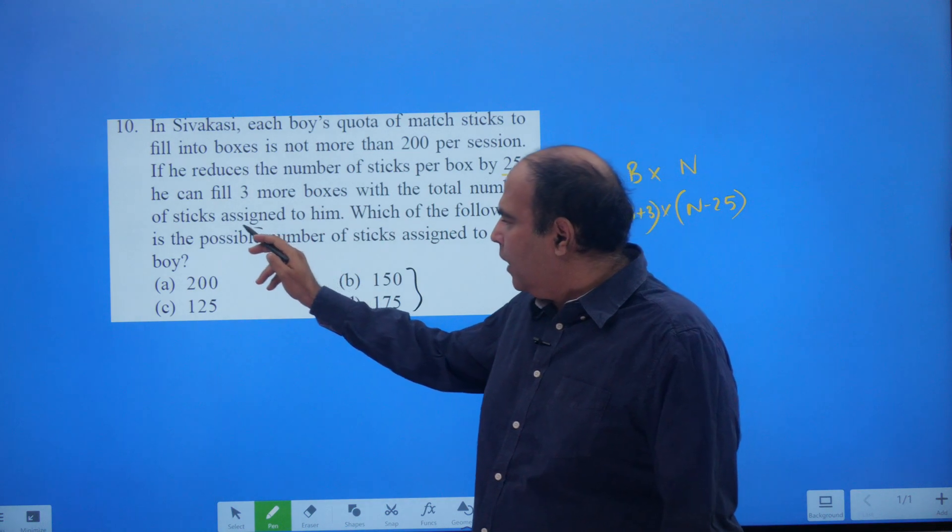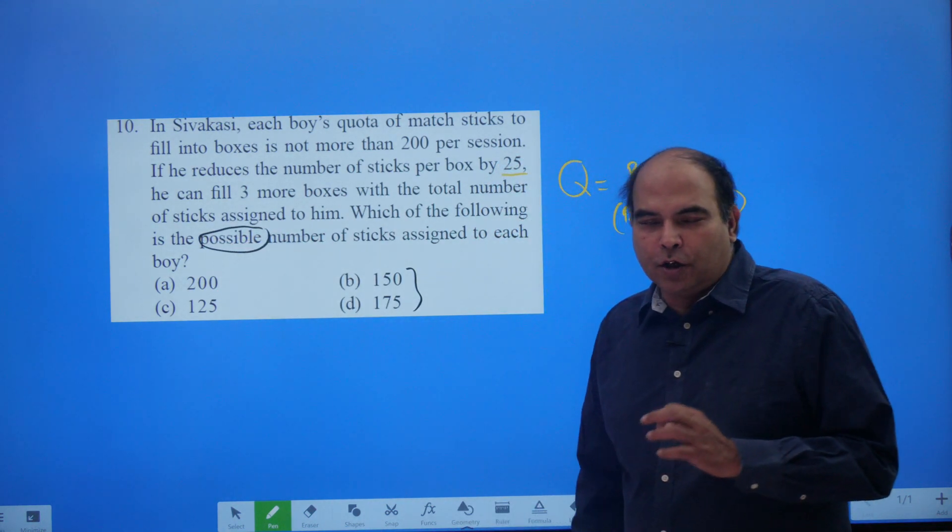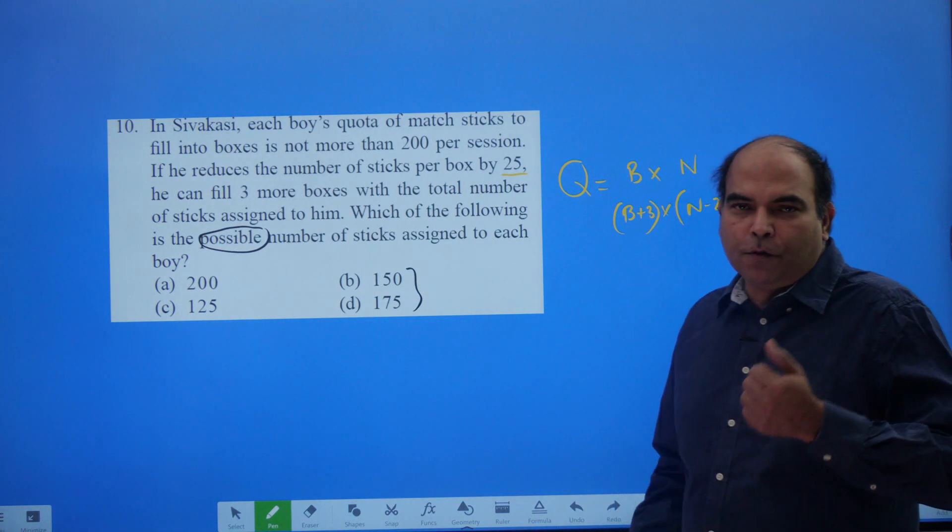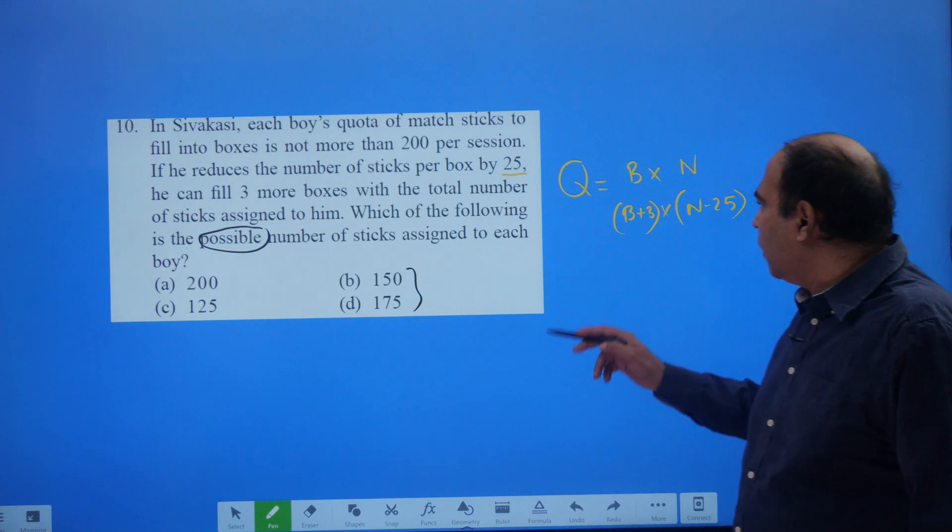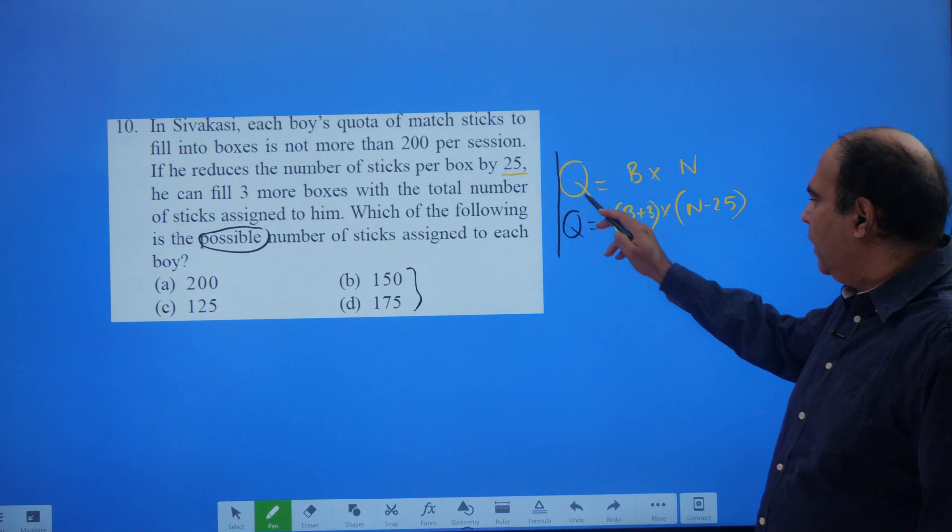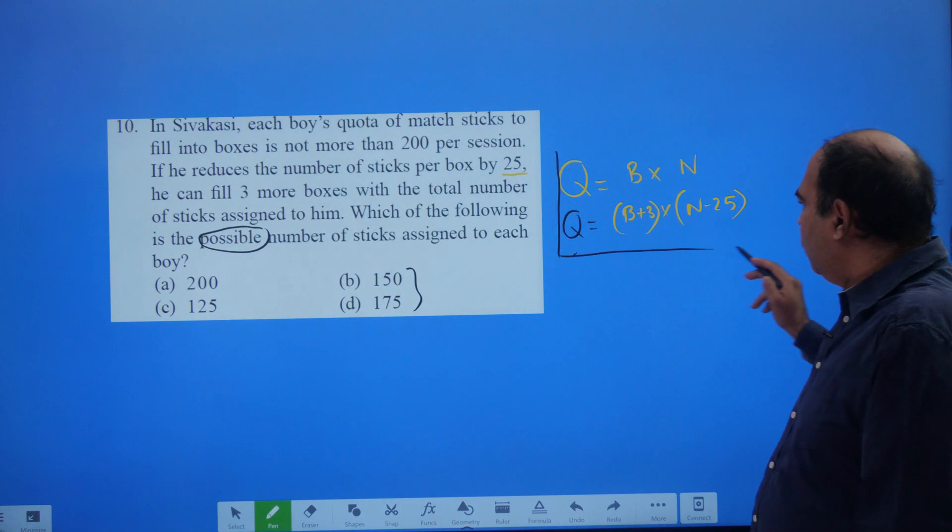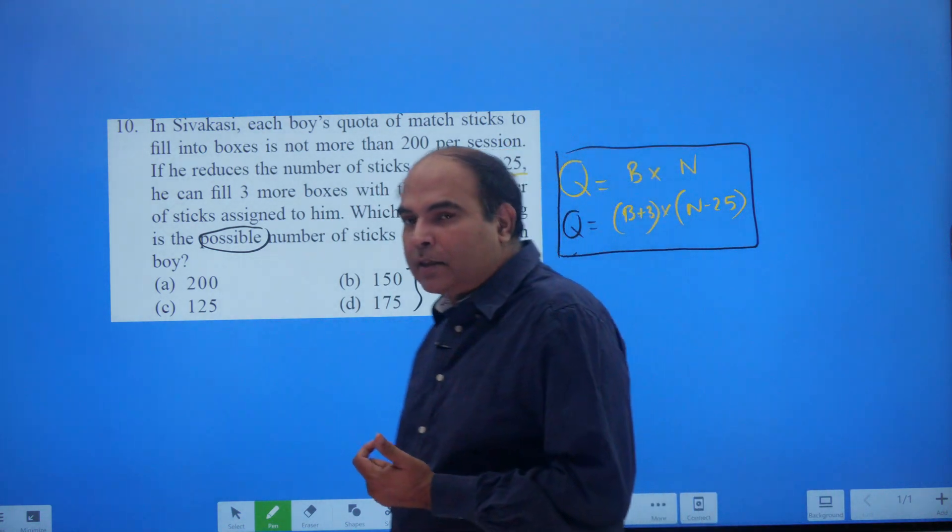You need to understand whenever you see this kind of question or this kind of trigger inside a question, possible number, you realize of course that there are multiple solutions available. And you should understand that from here also, Q equals B into N and Q equals B plus 3 into N minus 25. You got two equations, three unknowns, and that's one of the basic fundamentals of math.